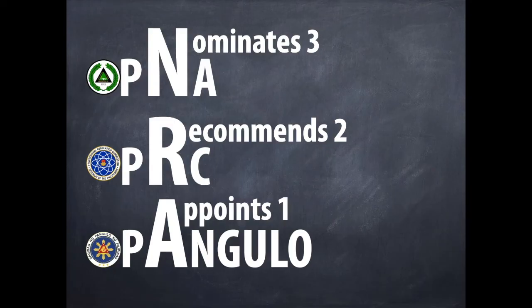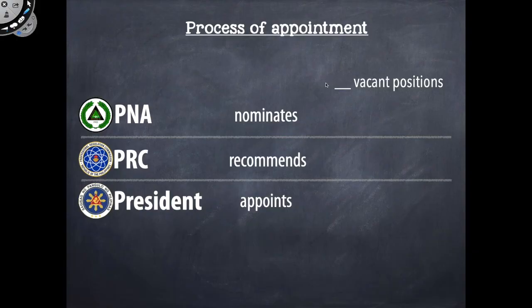And that is the correct process of appointment of a member of the BON. Now if all the 7 positions in the BON are vacant, then the PNA will recommend 21 of its most qualified members. And then the PRC will recommend 14 out of these 21 nominees. And lastly, the President will appoint 7 BONs.